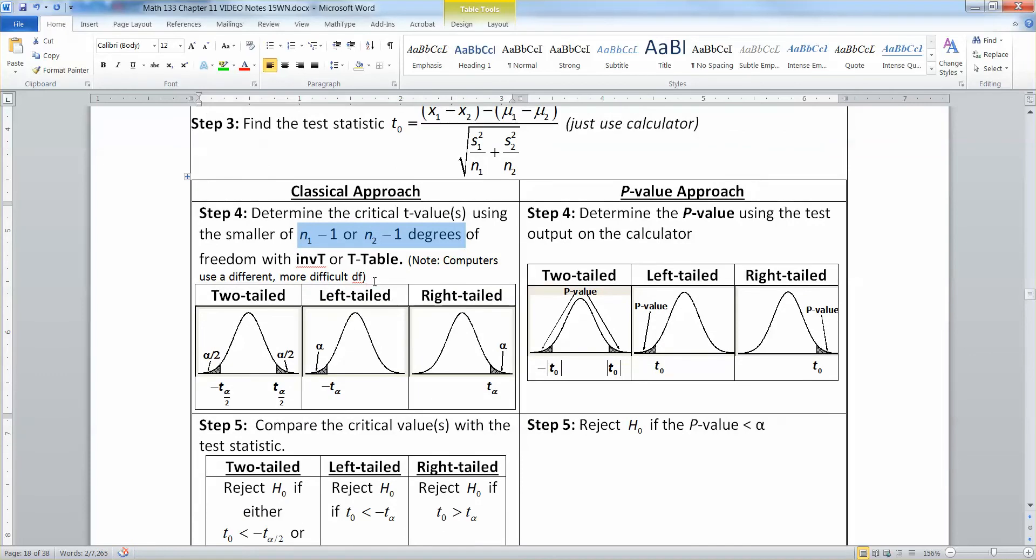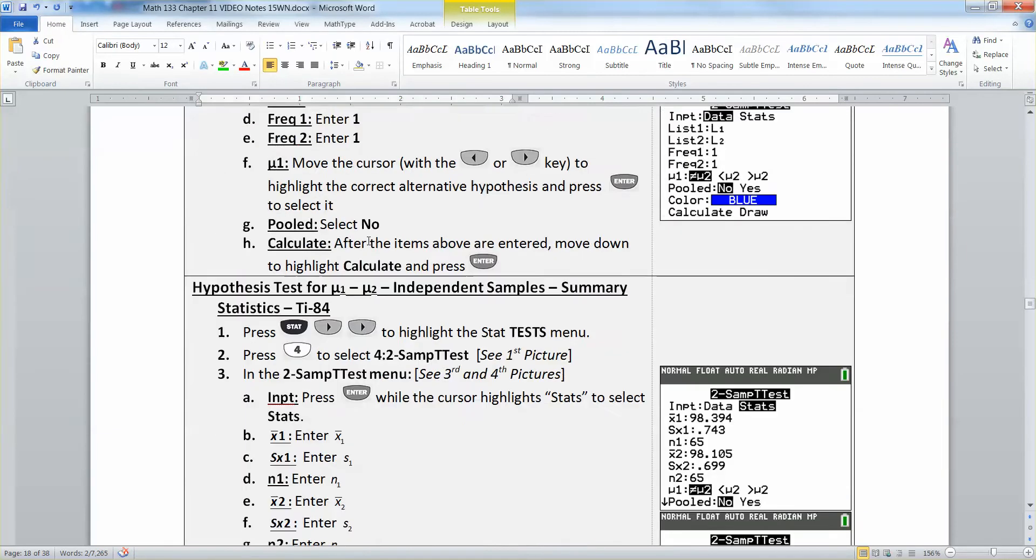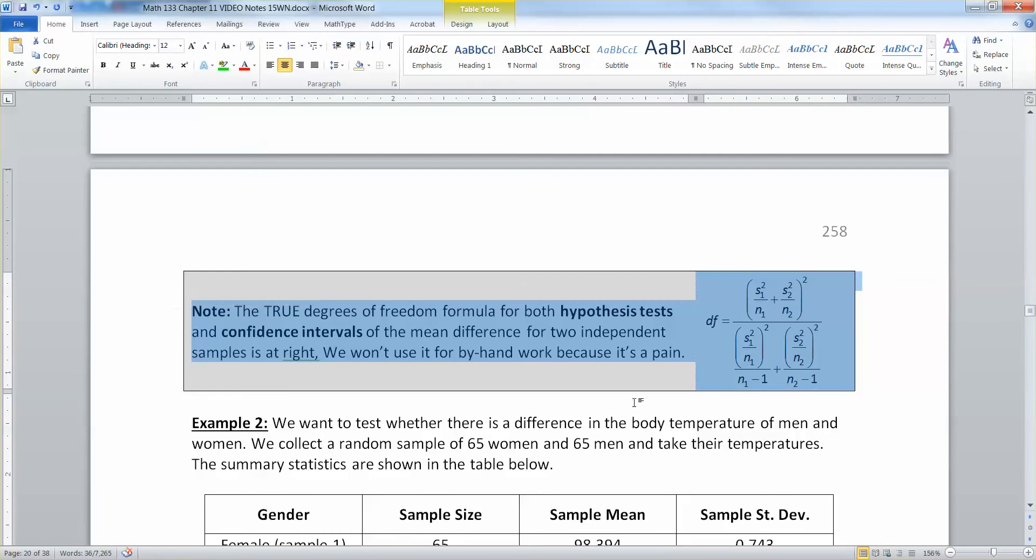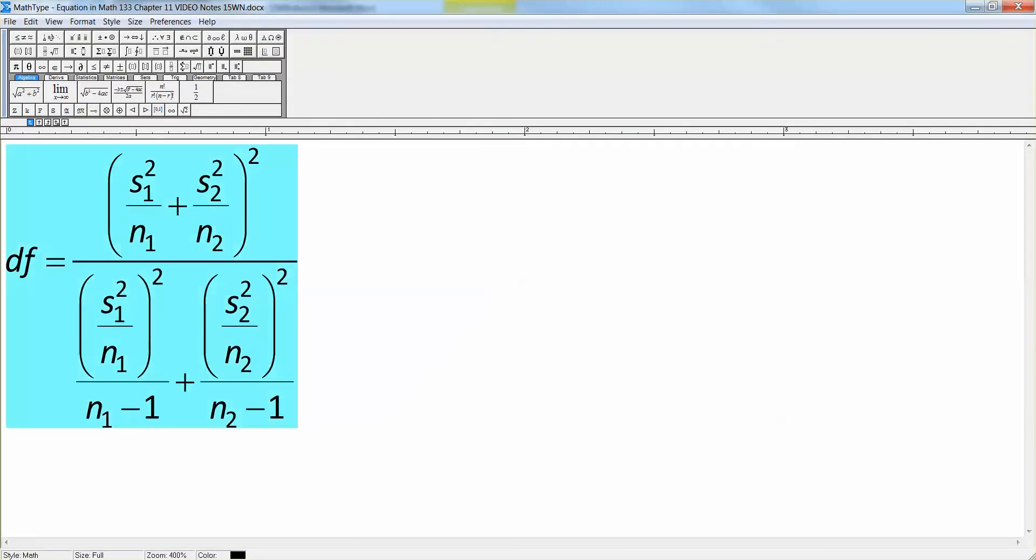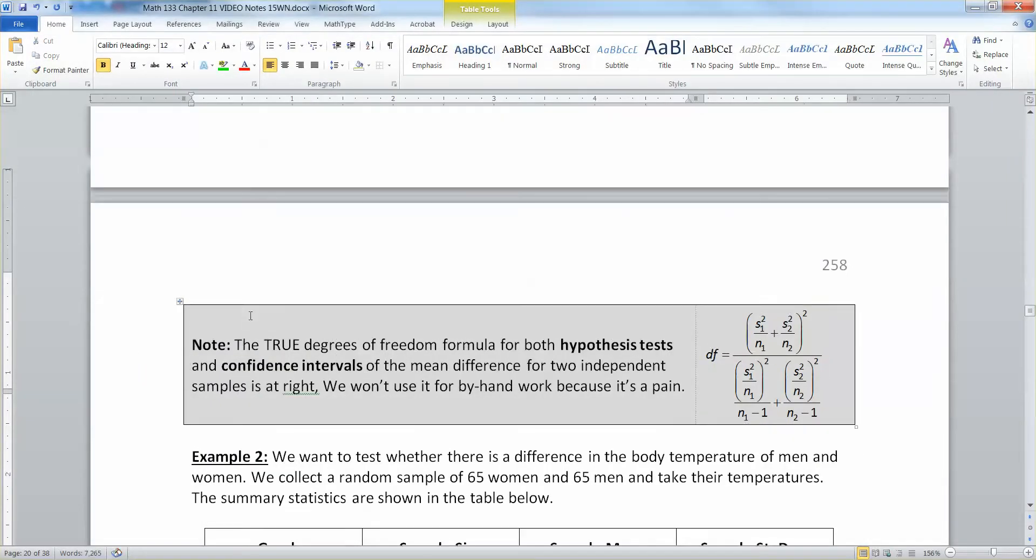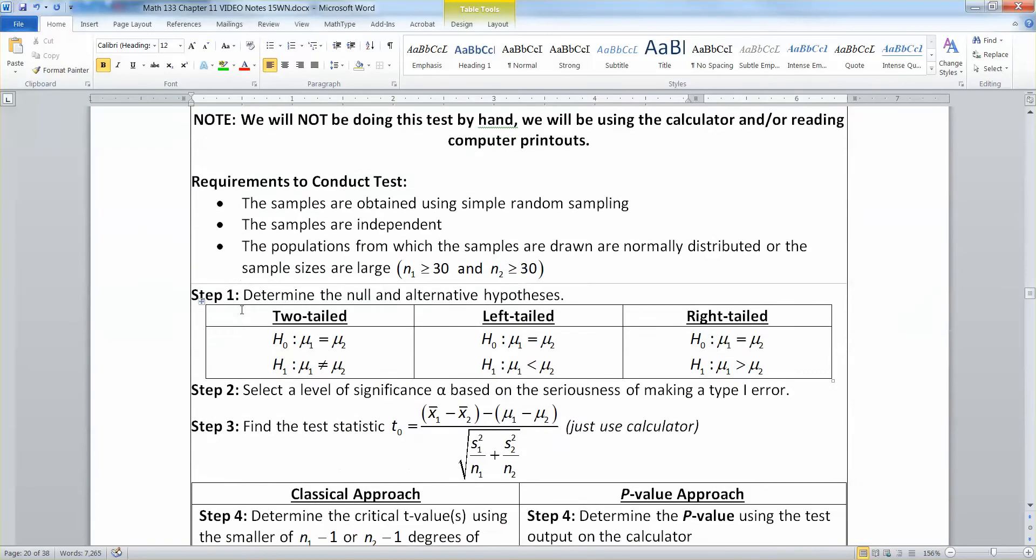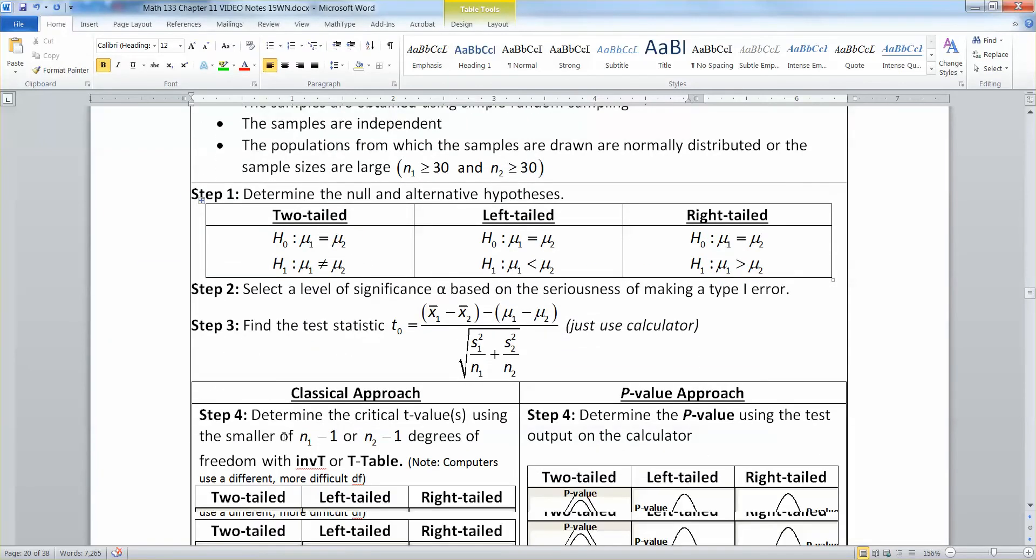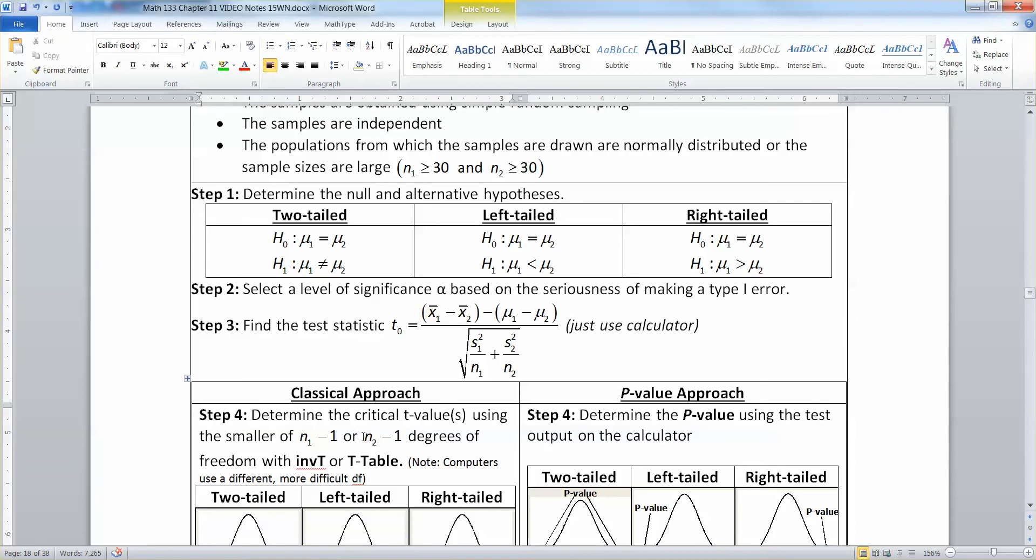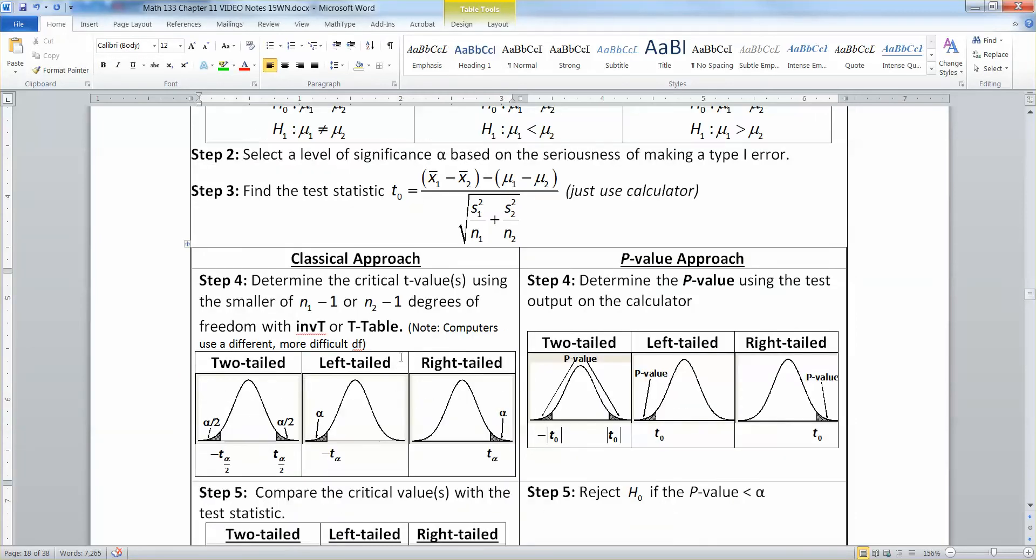Degrees of freedom is actually an extremely complicated formula. I think I have it on a page coming to you soon right here. That is actually the degrees of freedom. This formula right here - that is the degrees of freedom formula. Yeah, I agree. It's pretty terrible. So basically what I say here is we're not going to use that up here in the test. I say we're just going to kind of use the smaller of N₁ minus one and N₂ minus one. It's not strictly according to Hoyle. It's not the way that real statisticians do it. Real statisticians will use that more complicated degrees of freedom.